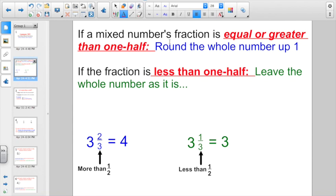So if a mixed number's fraction is equal or greater than a half, round the whole number up one. If the fraction is less than a half, leave the whole number as it is. So for example, here we have 3 and 2/3. We're looking at the fraction, and we decided that 2/3 is more than a half. So I round the whole number up to 4. Or over here, if I started with 3 and 1/3, here we decided 1/3 is less than a half. So we just left it as 3.